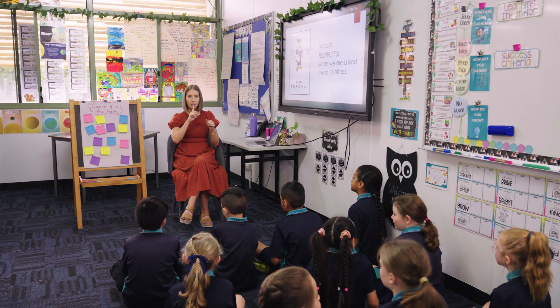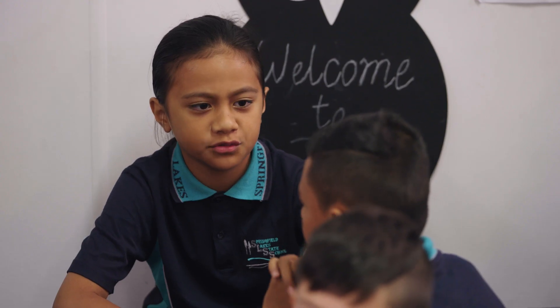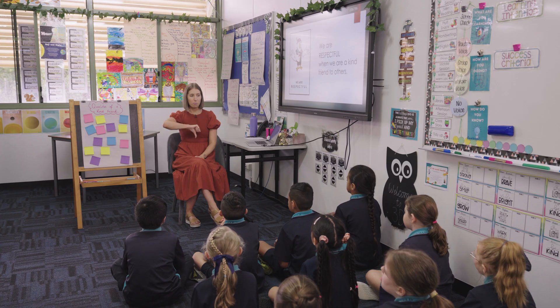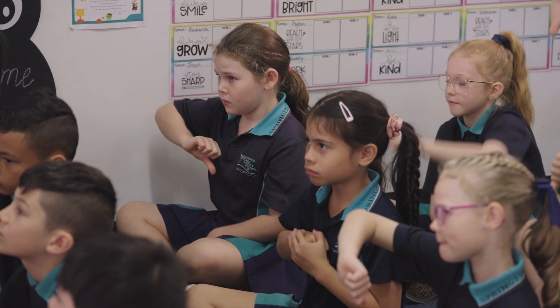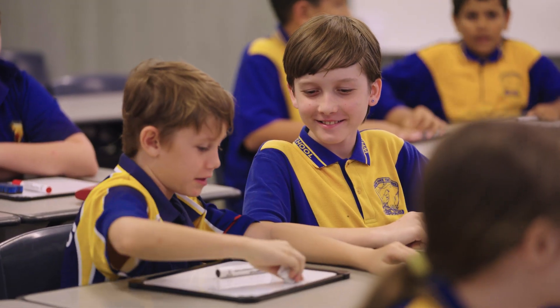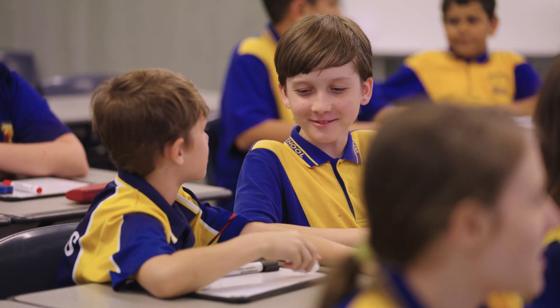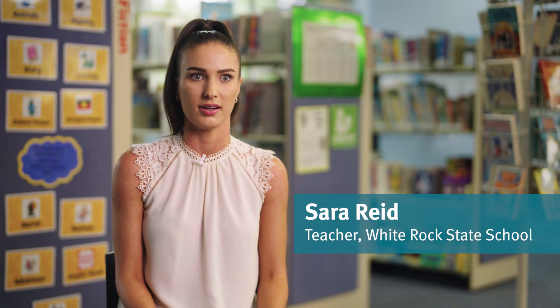I'm constantly checking in with them, checking that they know and understand the learning intention. This can be through questioning or getting the children to turn and talk to one another to share their ideas. I also do a lot of feedback strategies like thumbs up, thumbs down. It really helps get rid of that anxiety — if they're unsure they can talk through with someone, share their ideas, and even if they haven't had an opportunity to share to the class they've at least shared with a partner.